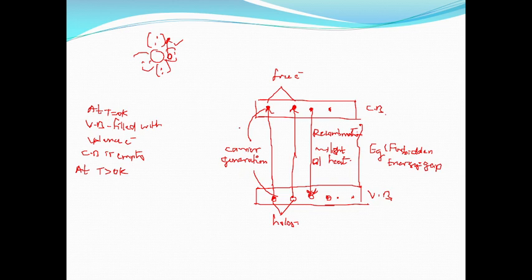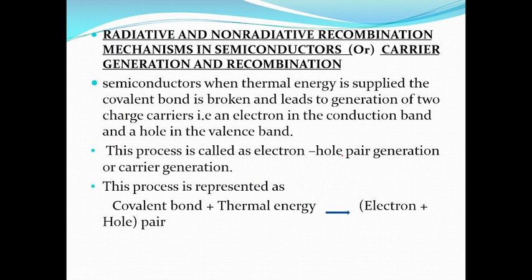So what is carrier generation? When thermal energy is given, electrons move from the valence band to the conduction band, creating electron-hole pairs — this we call carrier generation. After some time, the electron loses its energy and recombines with its state of hole in the valence band. This process we call recombination. When the electron falls from conduction band to valence band, it loses energy in the form of light or heat.